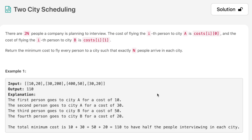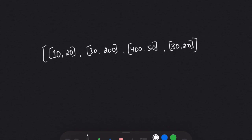The question says there are 2N people. A company is planning to interview them. The cost of flying the i-th person to city A is cost[i][0] and the cost of flying the i-th person to city B is cost[i][1]. Return the minimum cost to fly every person to a city such that exactly N people arrive in each city. That means we have a total of 2N people and two cities, so we have to send exactly N people to city A and exactly N people to city B.